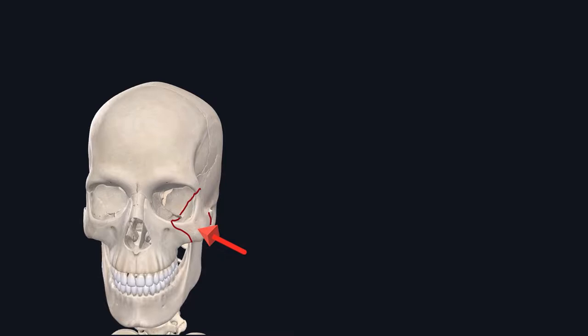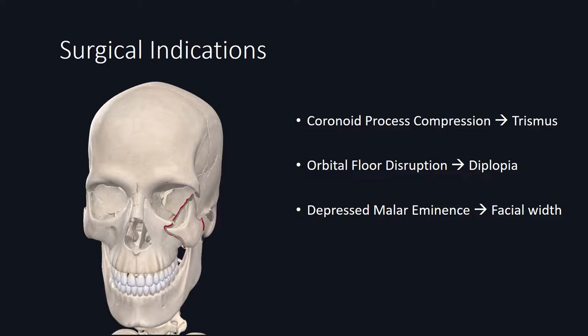In a typical ZMC fracture, you have impact that occurs at the malar eminence. The impact will cause telescoping of the ZMC fracture into the maxillary sinus in an inferior and medial direction. The bone displacement can cause several issues. The zygomatic arch segment can be depressed, causing coronoid compression and trismus. As the malar eminence segment collapses in, it can lead to orbital floor fracture, which can lead to diplopia. And lastly, a depressed malar eminence can cause narrowing of the facial width and facial asymmetry. These are commonly considered the three surgical indications for ZMC repair.